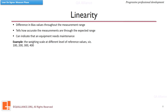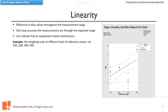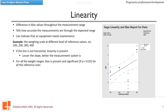Let us understand it with the help of an example. We want to check if there is any linearity present in the weighing scale. We take readings at different reference values like 100, 200, and 300g. In this graph, we can see a slope, showing that at a higher range the weighing scale is giving higher readings — there is no consistency in measurements across the measurement range. If the gauge measures low at small reference values and high at large reference values, and also if p is less than 0.05, there may be a statistically significant slope, which indicates large linearity.